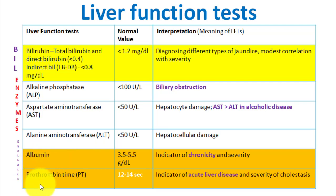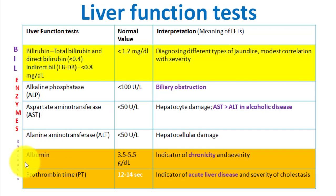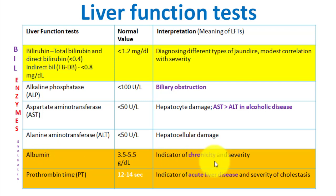Albumin and prothrombin reflect synthetic function of the liver. If the cells of the liver are viable, albumin and prothrombin will be synthesized normally. If there is cell damage, the synthesis of albumin and prothrombin will decrease. Albumin is an indicator of chronic liver disease — it reflects both chronicity and severity. If more damage occurs, there will be less synthesis of albumin.